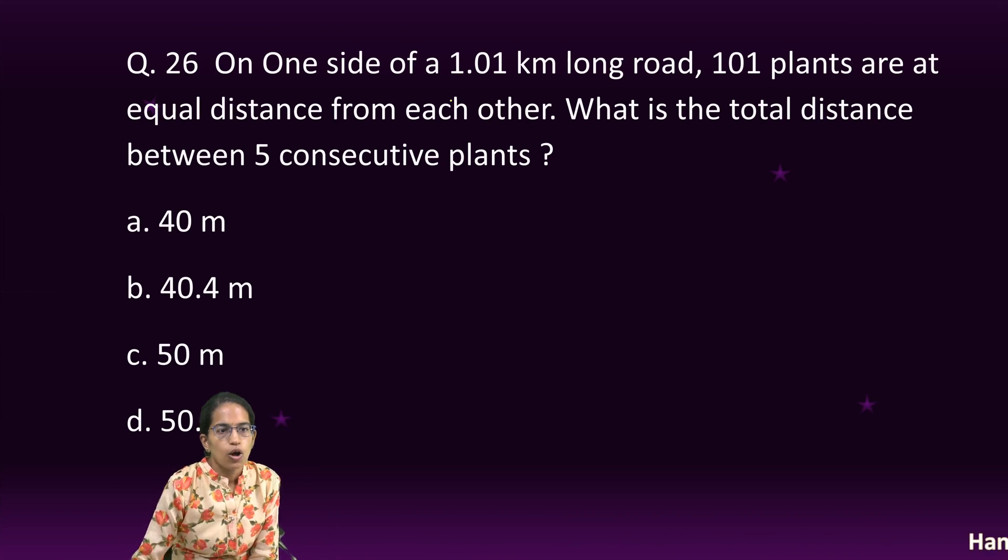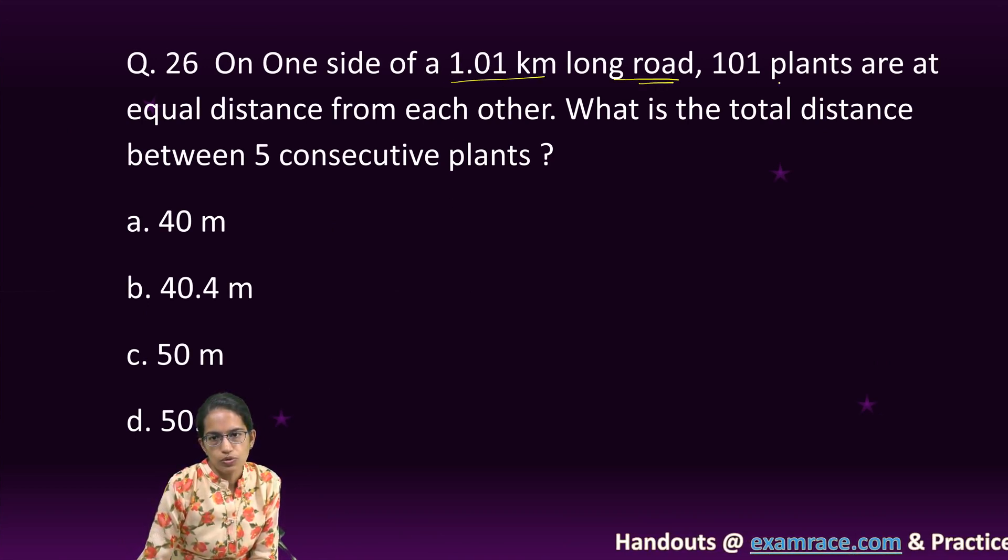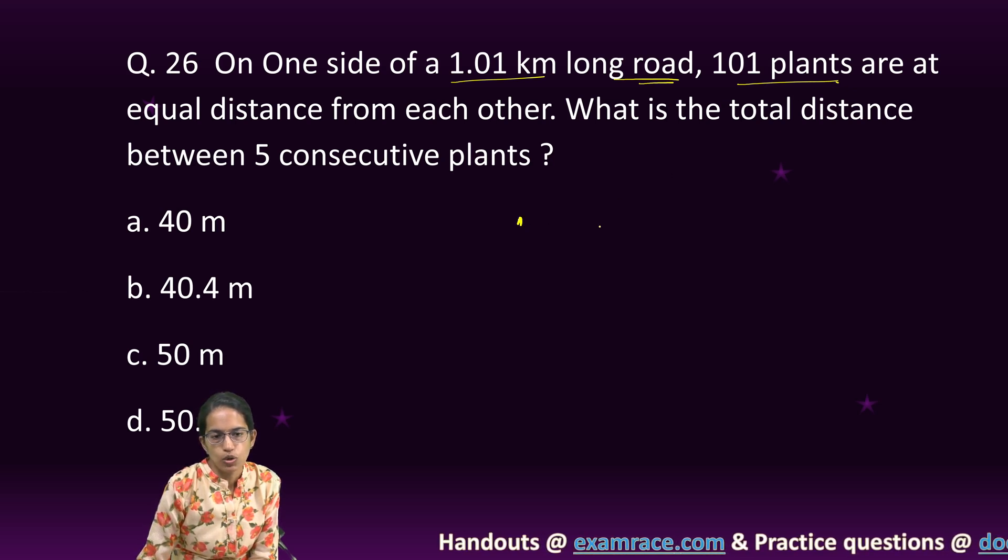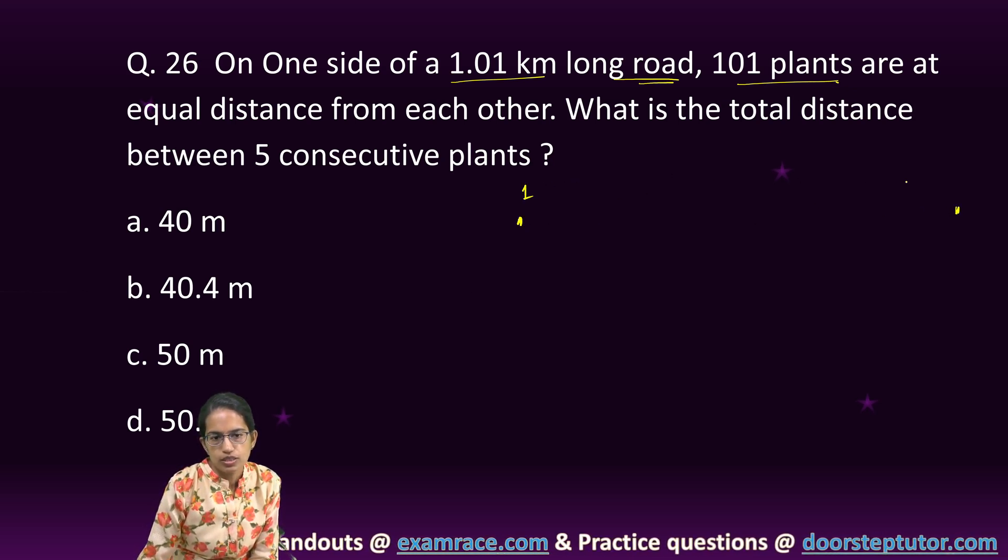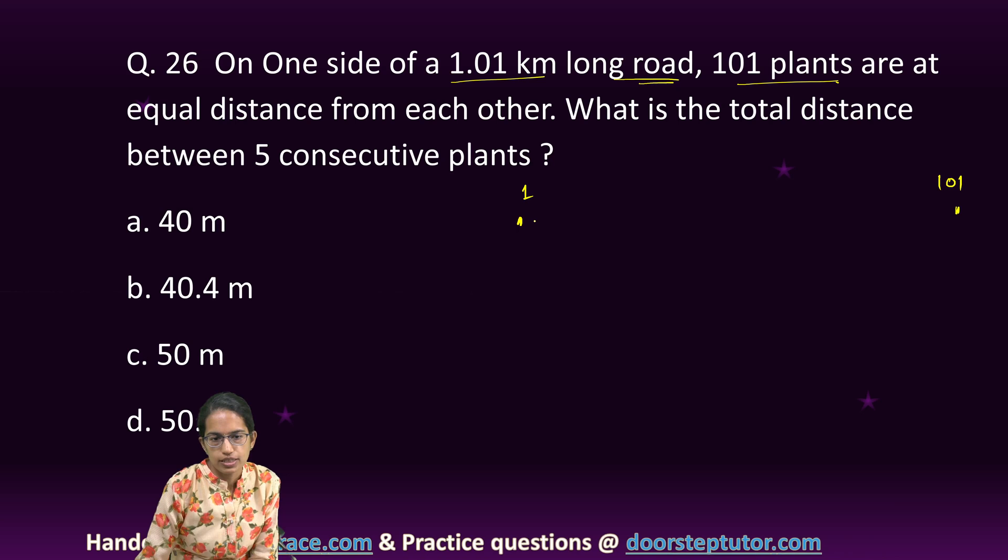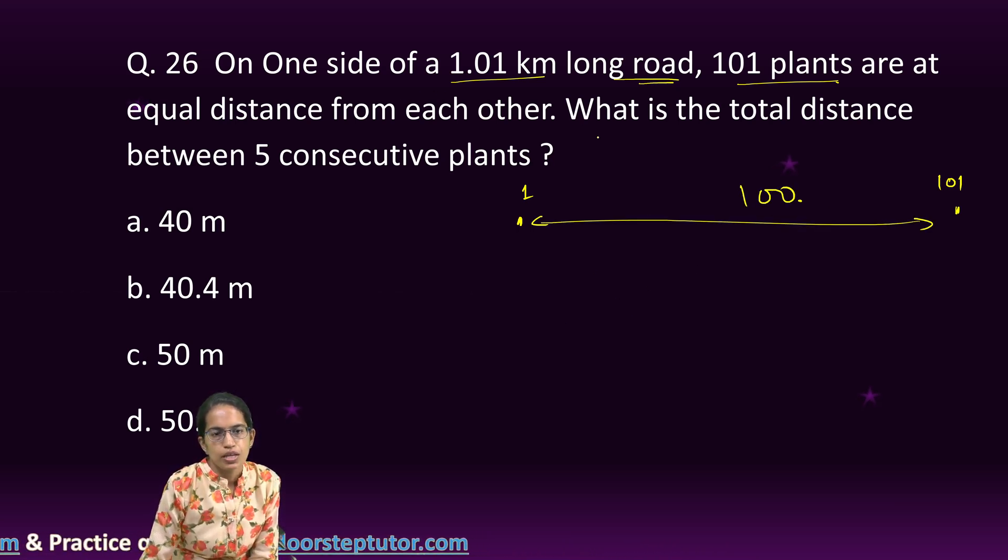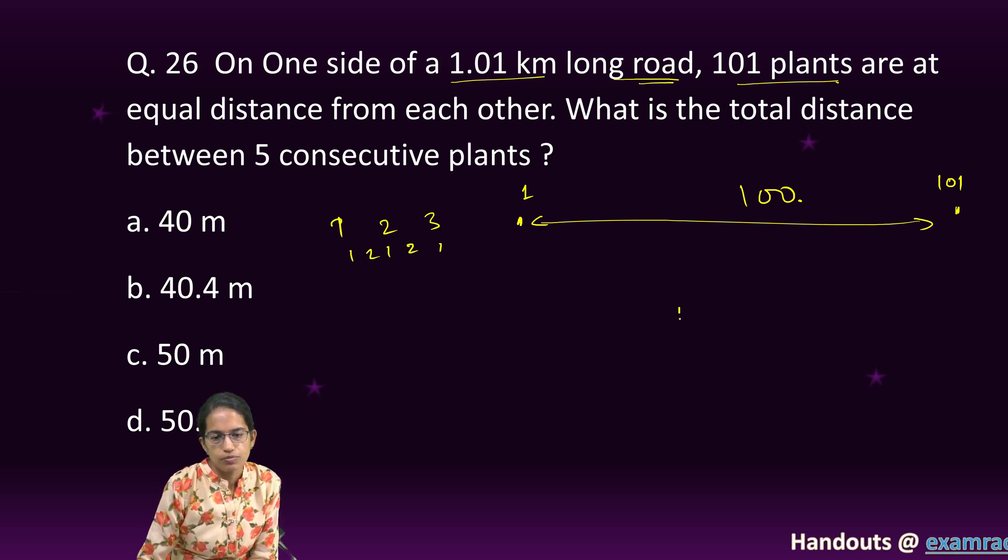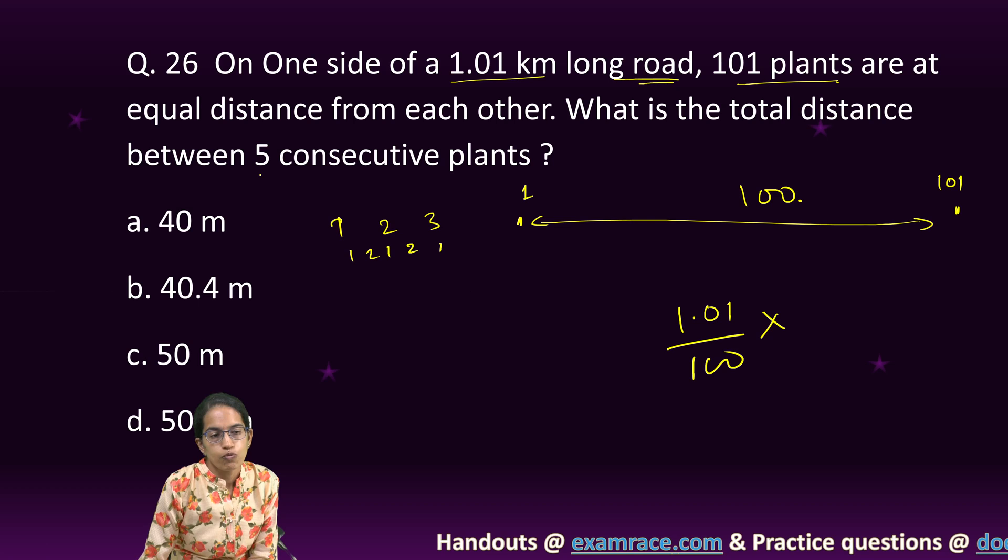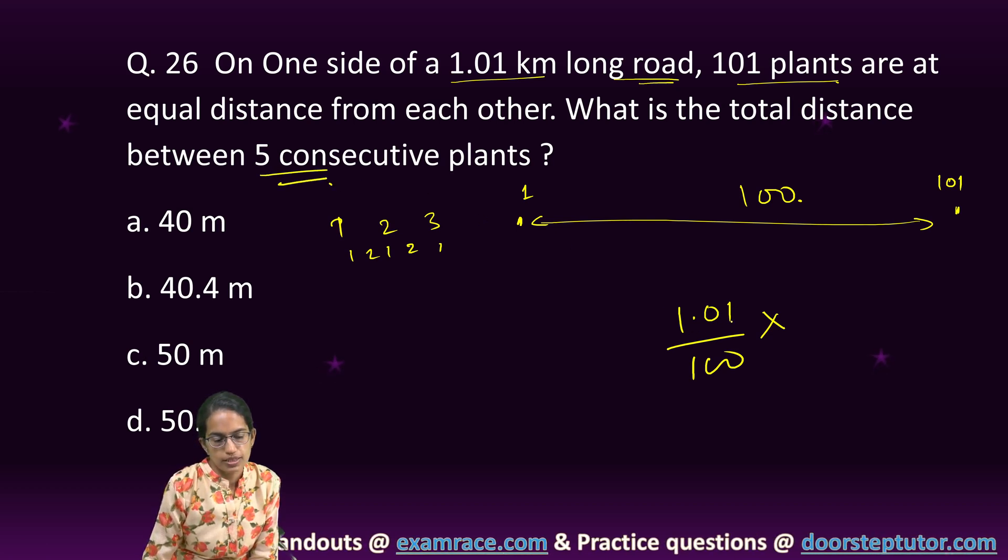The next question is, on one side of the 1.01 kilometer long road, 101 trees are planted. So, this is the first tree, this is the 101 tree. How many gaps could be there? 100 gaps could be there. Because if there are three, how many gaps would be there? There would be two gaps. So, if there are 101, 100 gaps.